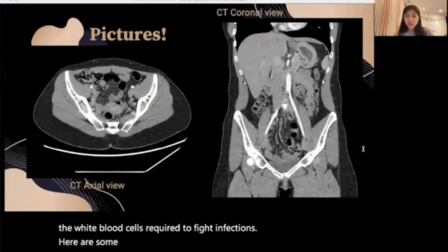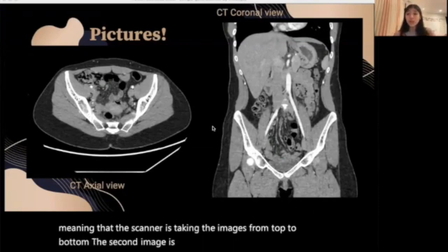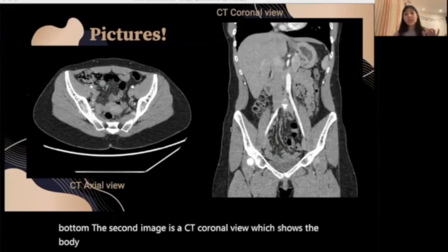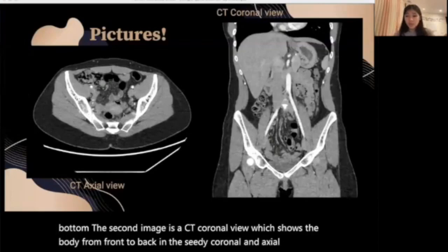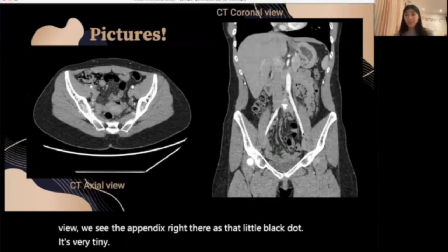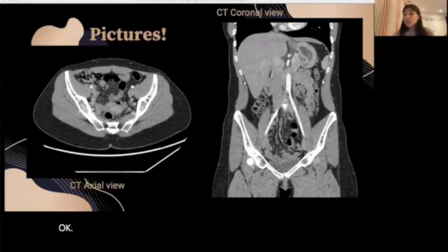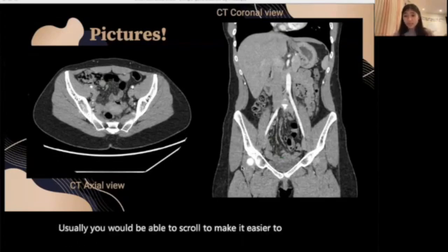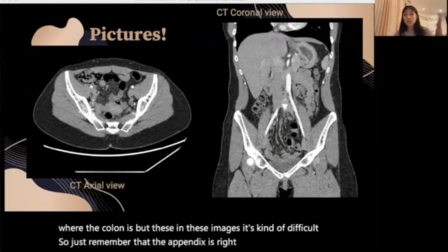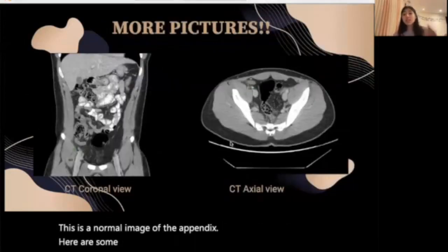Here are some pictures. The first image is the CT axial view, meaning the scanner is taking images from top to bottom. The second image is a CT coronal view, which shows the body from front to back. In the CT coronal and axial views, we see the appendix right there as that little black dot. It's very tiny, and sometimes it's difficult to spot because it can be so small — less than or equal to six millimeters in diameter. Just remember that the appendix is right here. This is a normal image of the appendix.